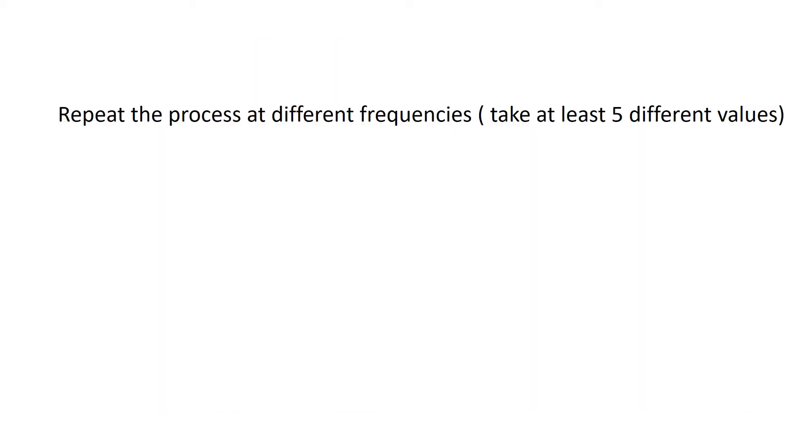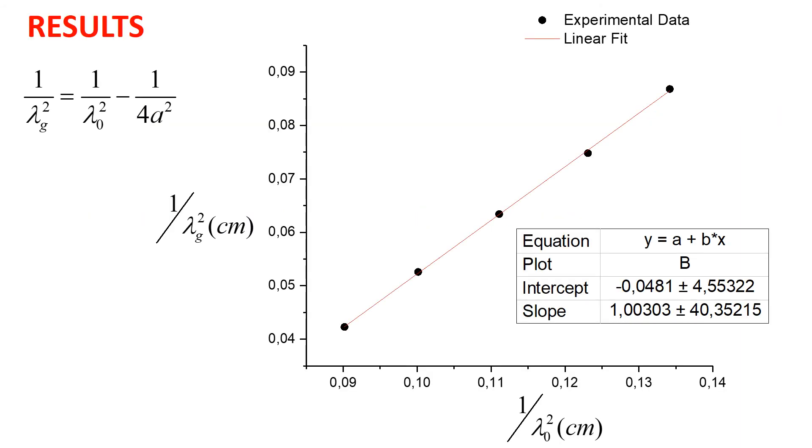Then we repeat all the process for at least five different values of frequency and we calculate the free space wavelength at each frequency. Finally, this graph shows the experimental data obtained at five different frequencies and the corresponding linear fit. We can observe the excellent agreement of slope and a values.